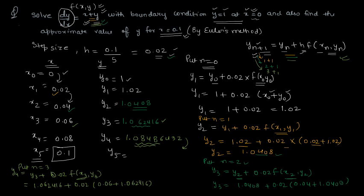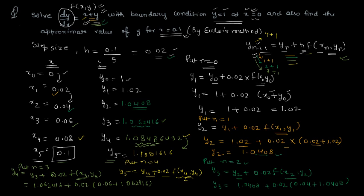For y₅ — which is our answer — put n=4: y₅ = y₄ + h·f(x₄, y₄) = y₄ + 0.02·(x₄ + y₄). Adding all these values gives the answer y₅ = 1.1081. In this way you can use Euler's method to find the value for any interval, giving an approximate result.